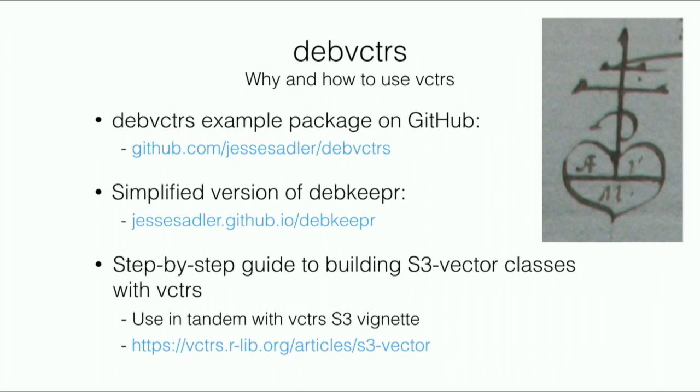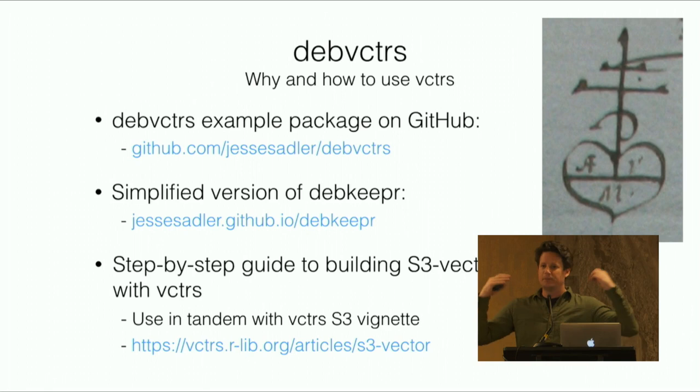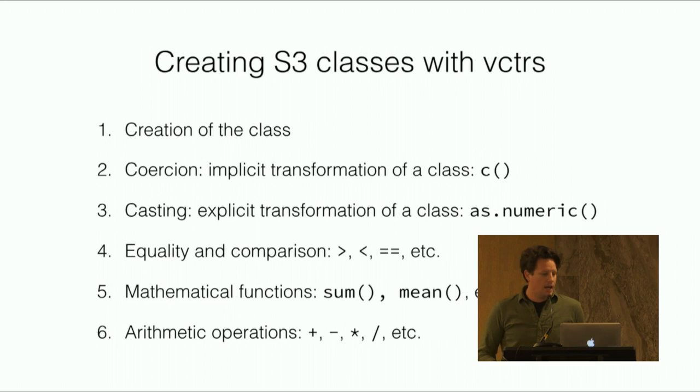What I've done is I've created a package I'm calling deb vectors, which is a simplified version of the package where I've done more of this in deb keeper. You see the URLs there. What the deb vectors package is - it provides a tutorial of a step-by-step way to get through this and I will go through some of these steps now. As an aside, the image you see there is a trademark of an individual who would use that. Again, more history stuff.